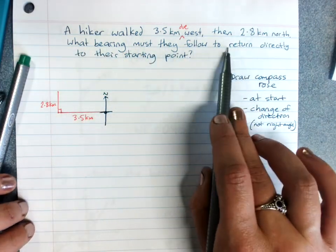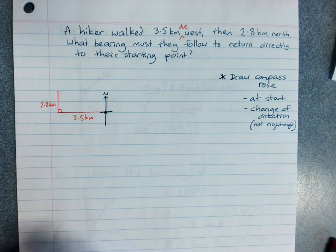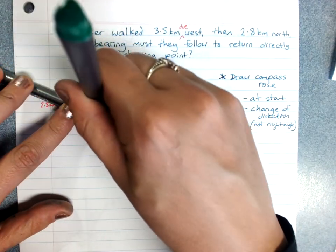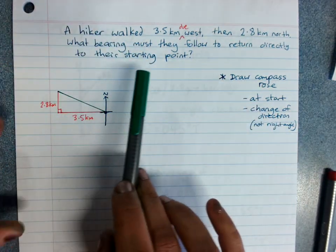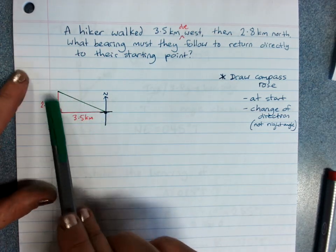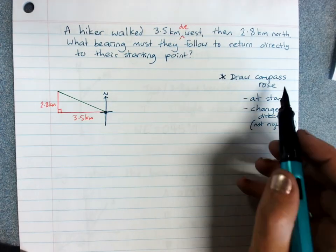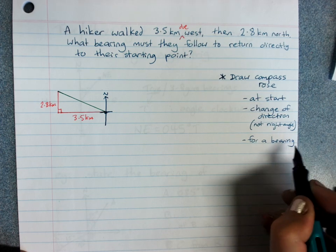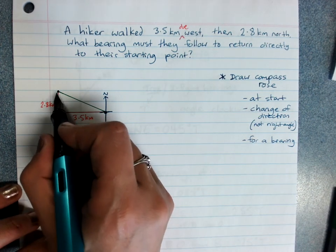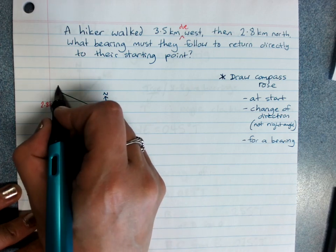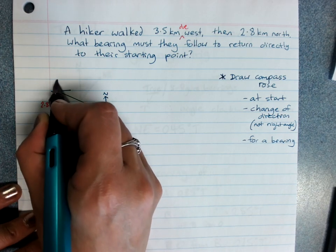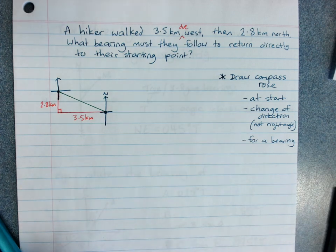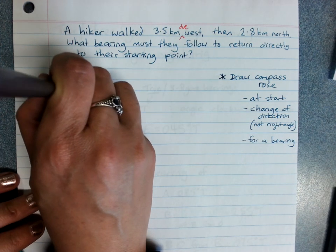Then what bearing must they follow to return directly to their starting point? And so that is, they want to go this way. If they'd asked what distance is it back to their starting point, you could use Pythagoras for that, because you've got two sides. Always draw a compass rose for a bearing. So if I want a bearing from here to my starting point, I must draw another compass rose in there.